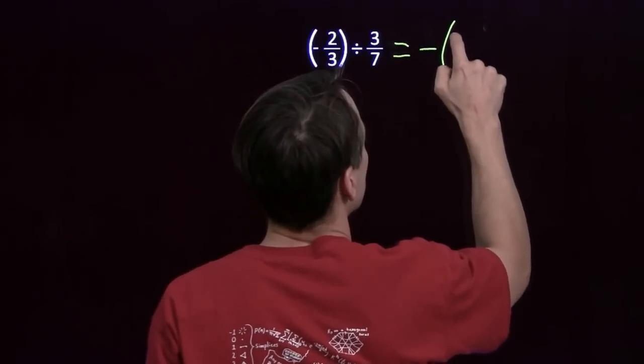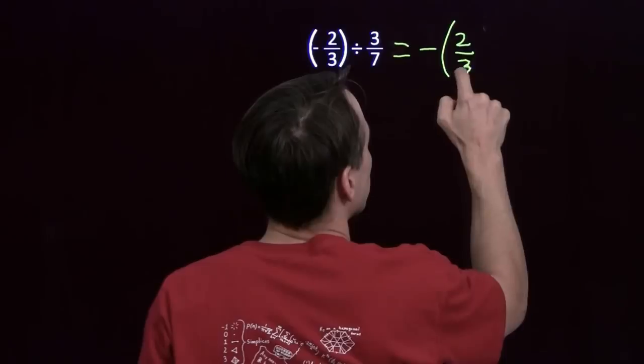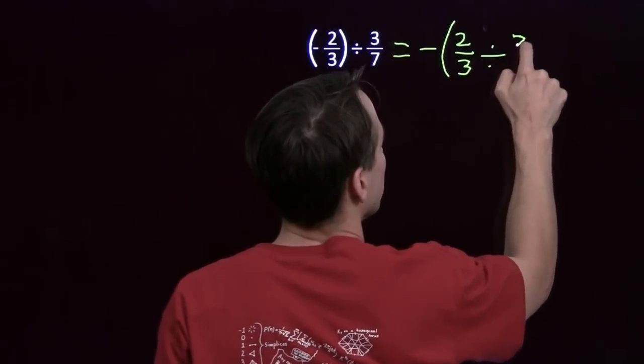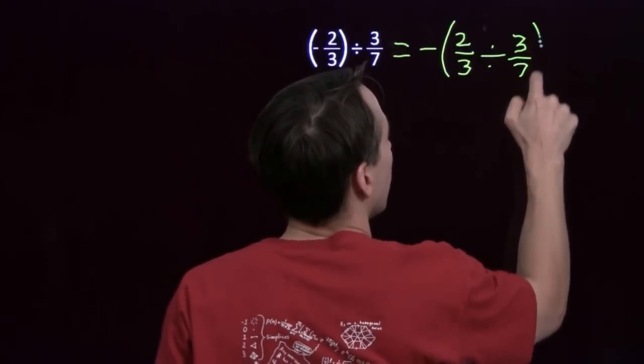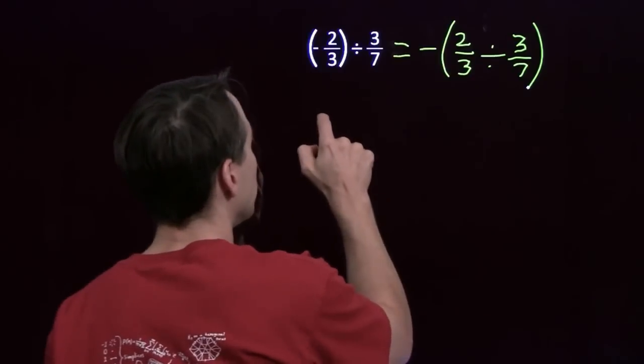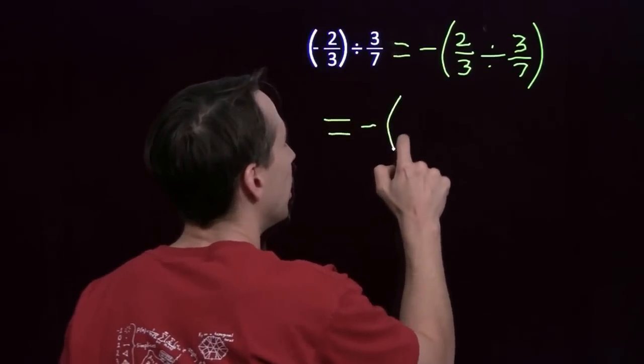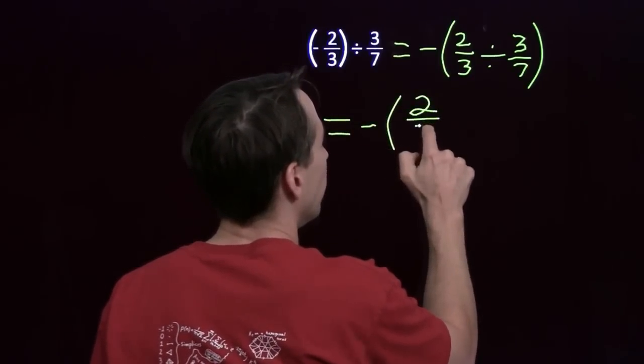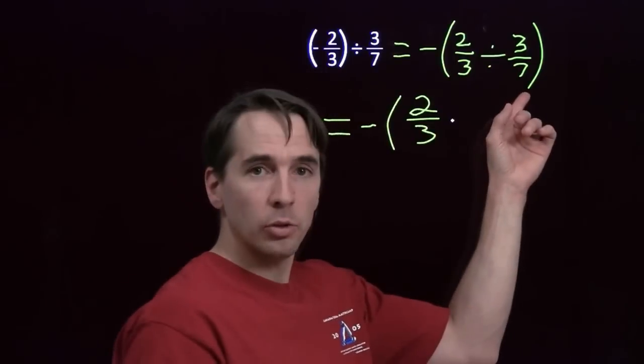Let me just take the negative out. Now, this is just going to be negative 2/3 divided by 3/7. And we know how to handle this division now. We're just going to turn it into a multiplication. This will be negative of 2/3 times the reciprocal of 3/7.